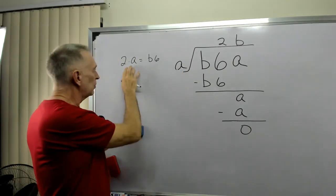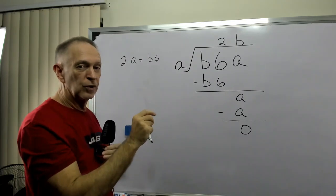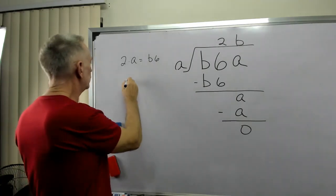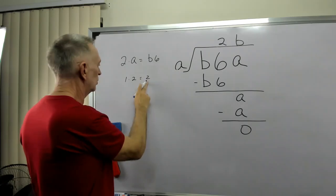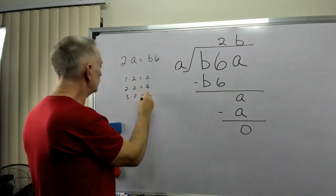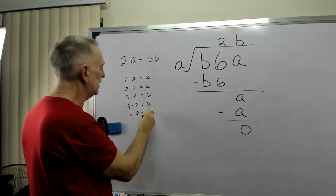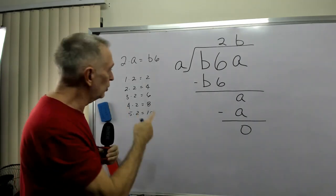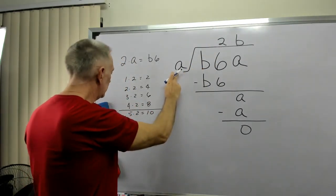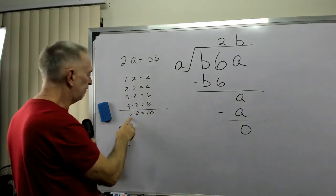What do I realize when I say 2 times A equals B6? 2 times some number gives me a two-digit number. Well, what are the multiples of 2? 1 times 2 equals 2, that's a single-digit number. 2 times 2 equals 4, 3 times 2 equals 6, 4 times 2 equals 8, 5 times 2 equals 10. Now I finally get into a two-digit number. So I know 2 times a single-digit number, if it's going to give me a two-digit number, this number has to be 5 or greater.